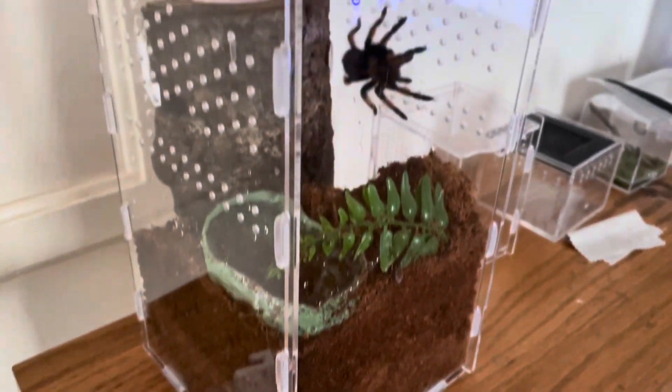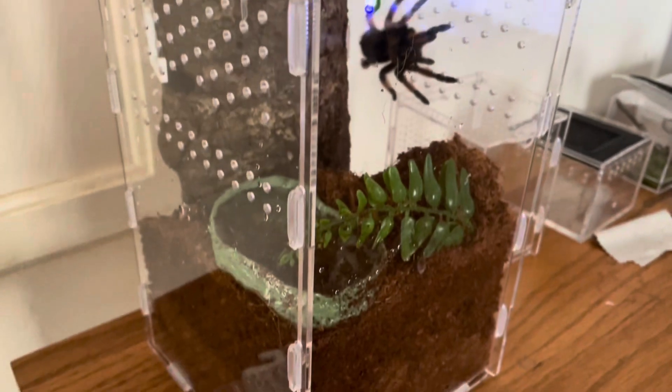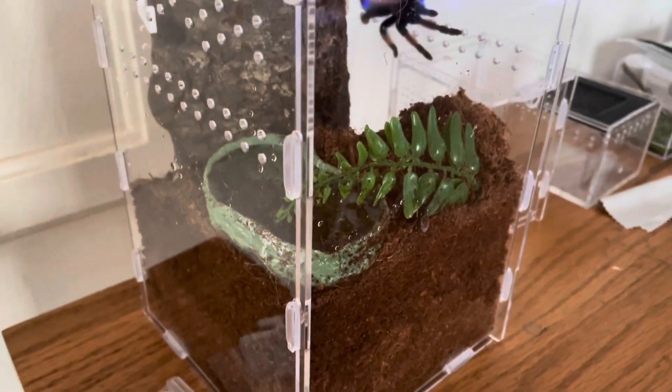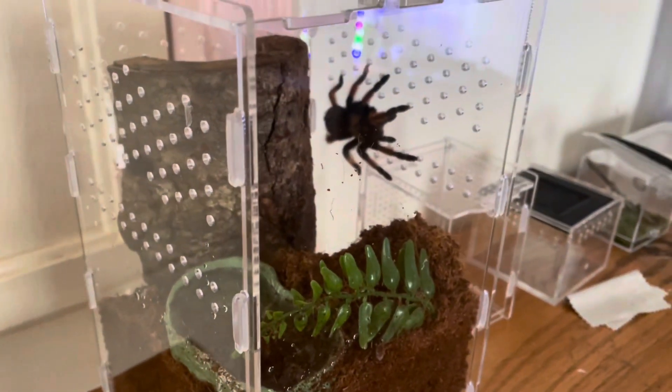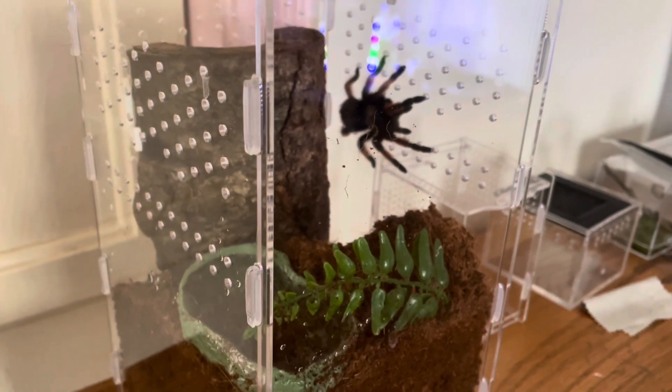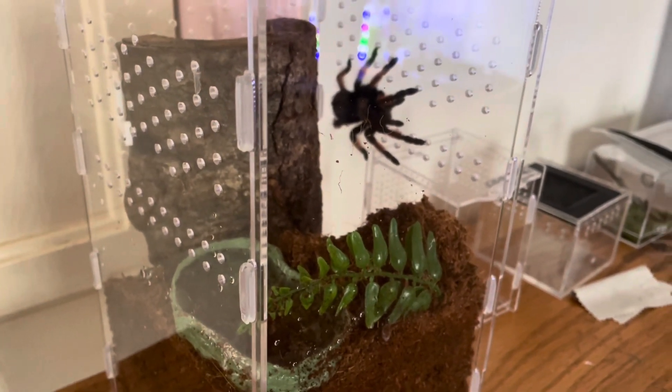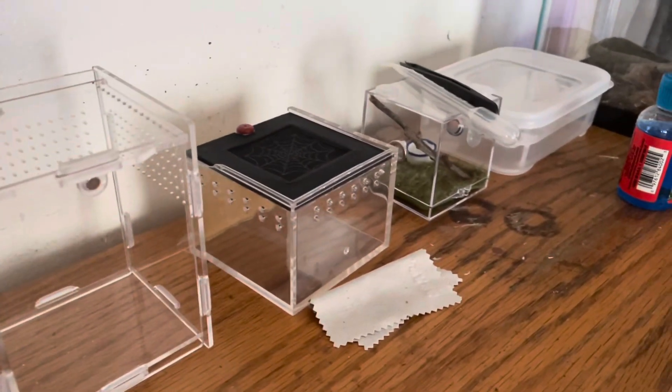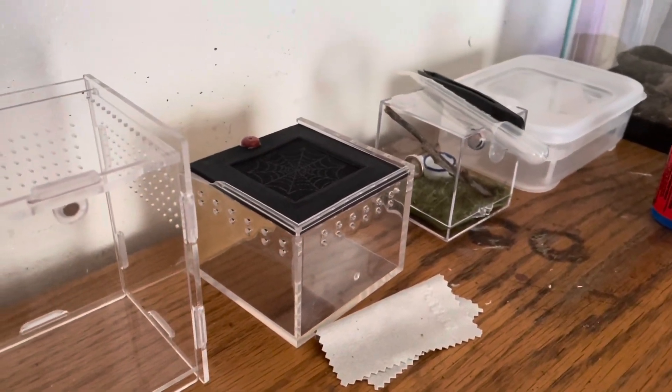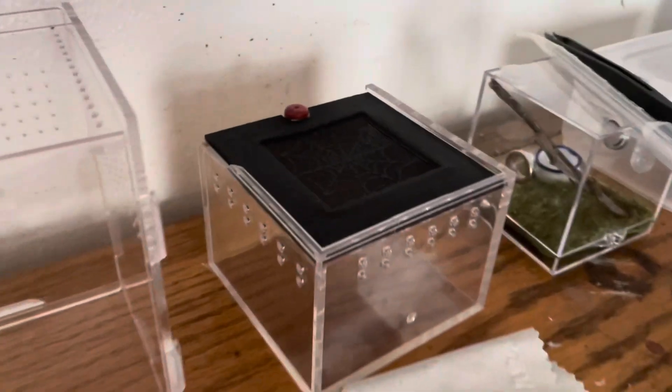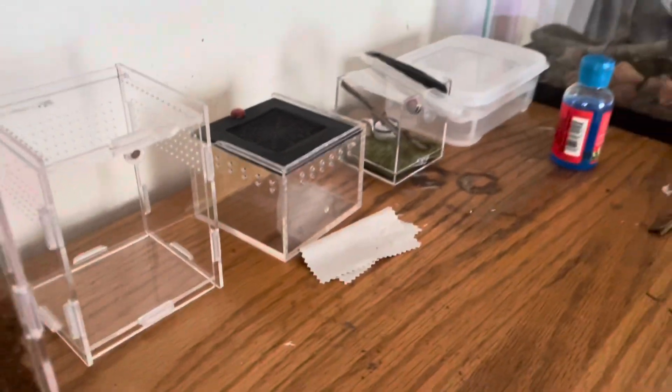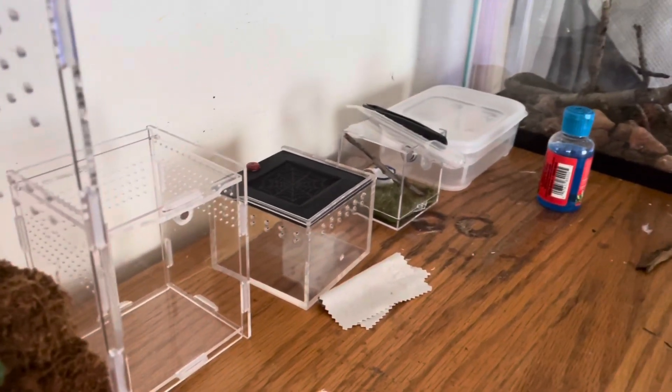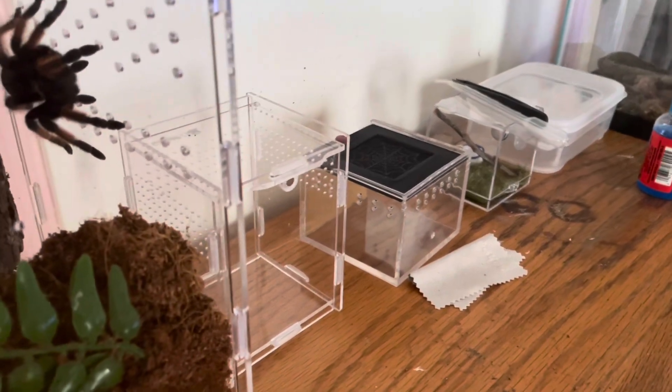So this was the larger enclosure I set up. And it also holds loose substrates very well. Nothing falls out. I temporarily added this baby Mexican red knee tarantula, since I'm planning a future build video for him. But yeah, that is essentially my Temu haul. If I had to give a rating out of five, I'd likely give it a 4.8 just because of damages. But aside from that, everything was accurately described and I plan to use these items.